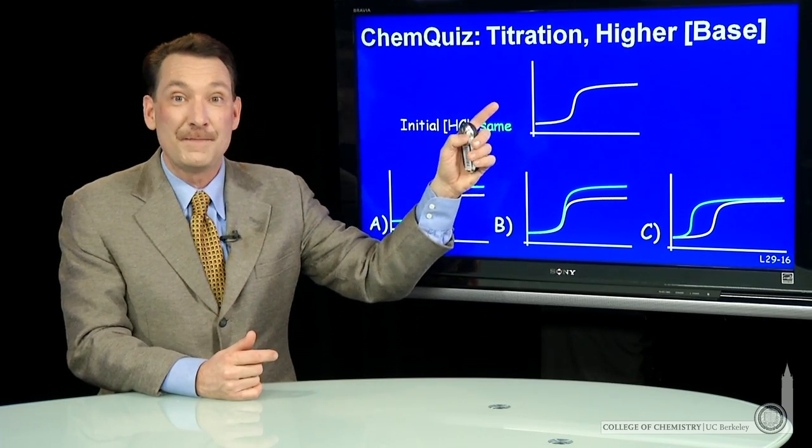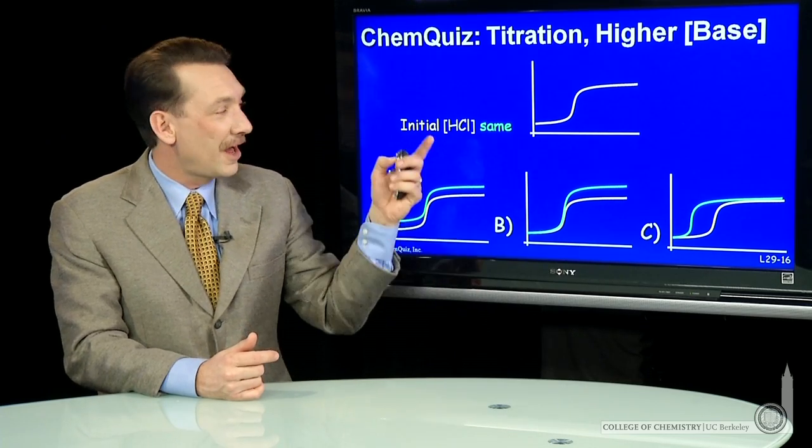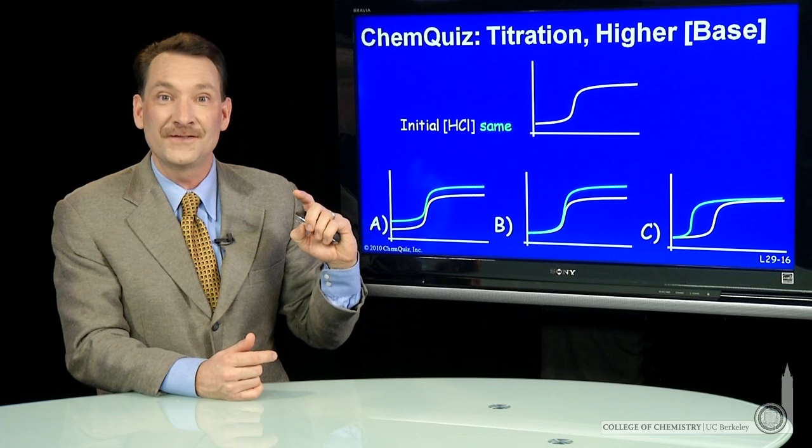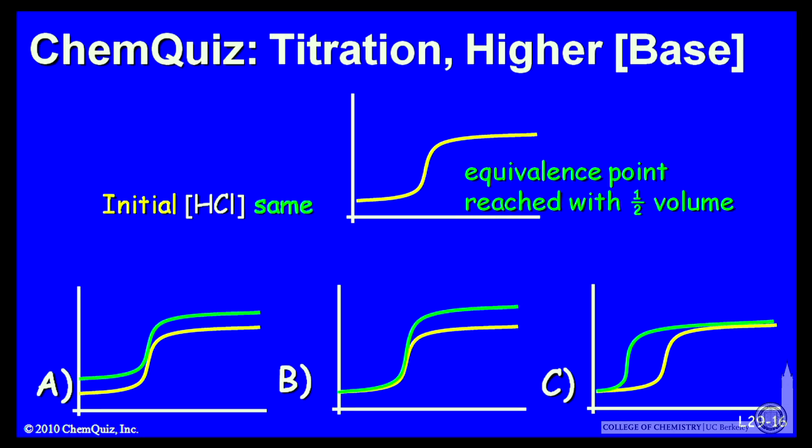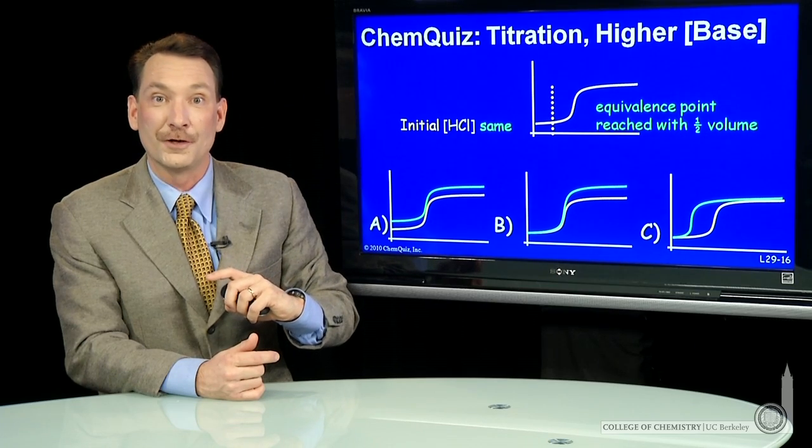As I add base, if I'm adding base that's twice as concentrated, then I'll use up the acid twice as fast. So I'll reach the equivalence point with half the volume of base. So here's half the volume of base. This is where the equivalence point will be, instead of here, as with the 0.1 molar base.